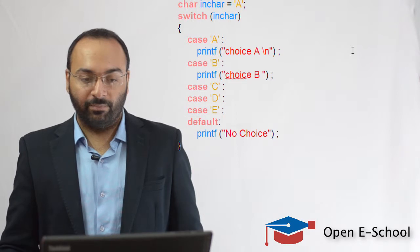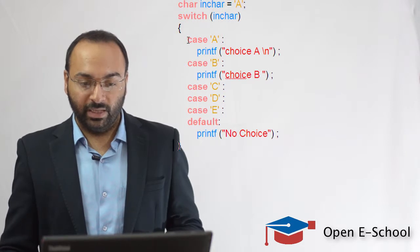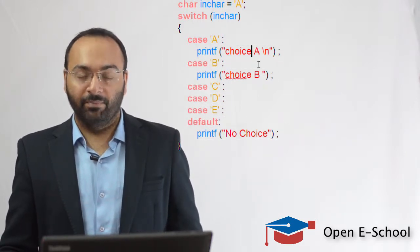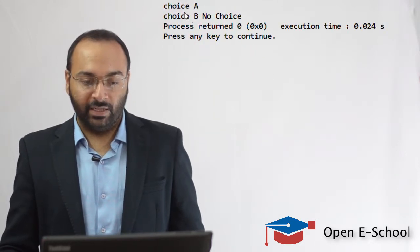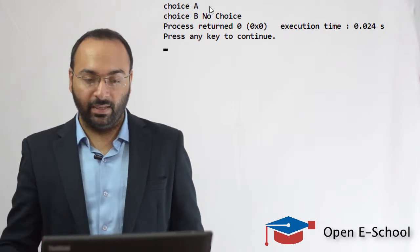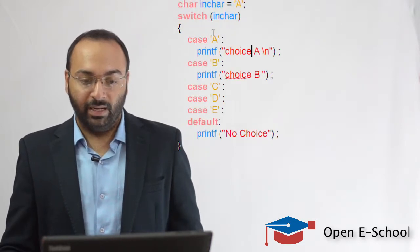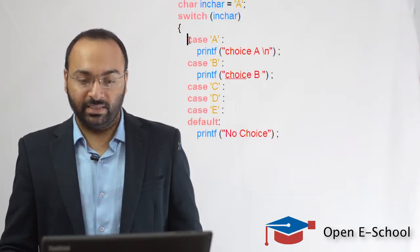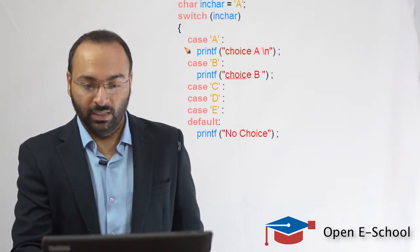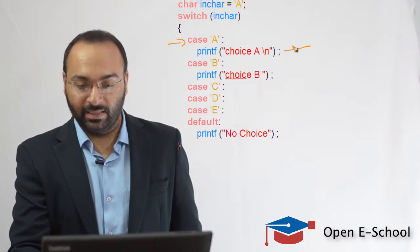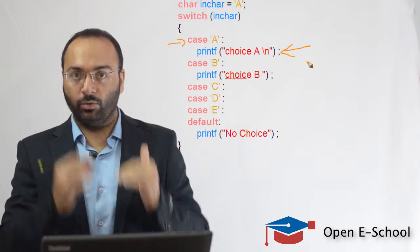Let's run this program using the C compiler. You can notice there is no break statement in this program. When we run it, the output shows 'choice A' in the first line. The value of `in_char` is capital 'A', so this case matches and the line 'choice A' gets printed, followed by a newline character.